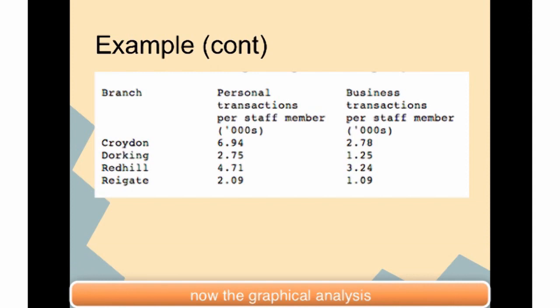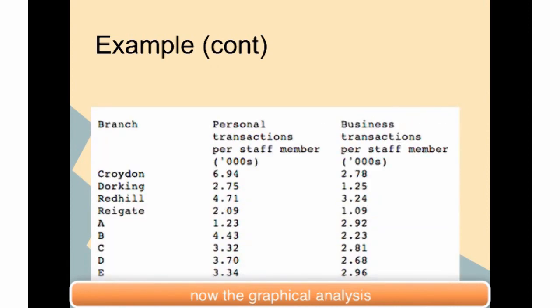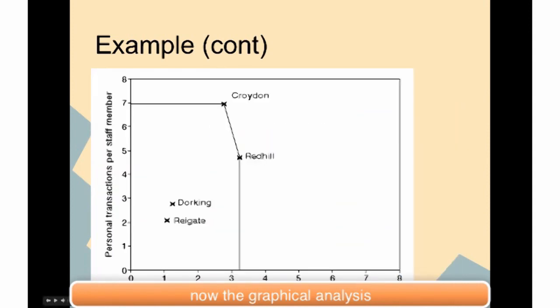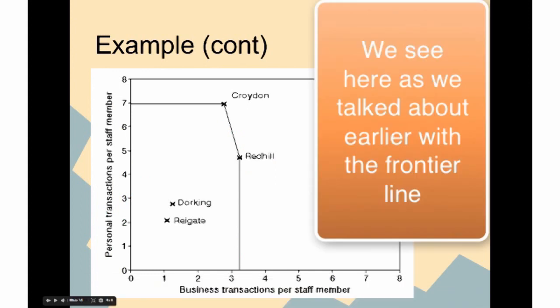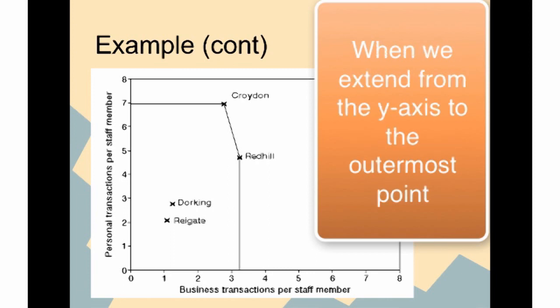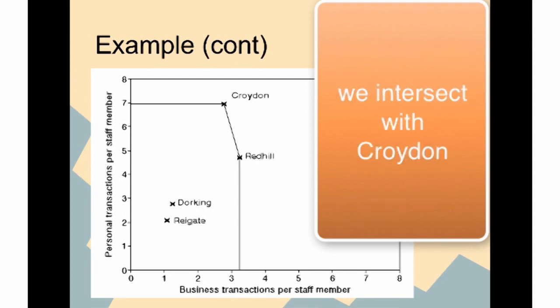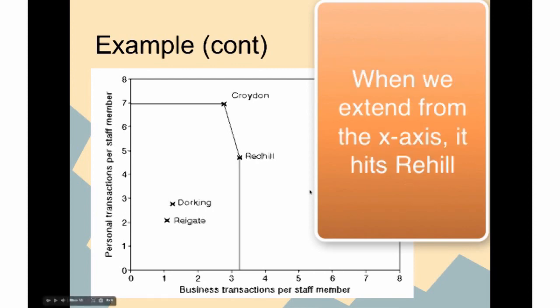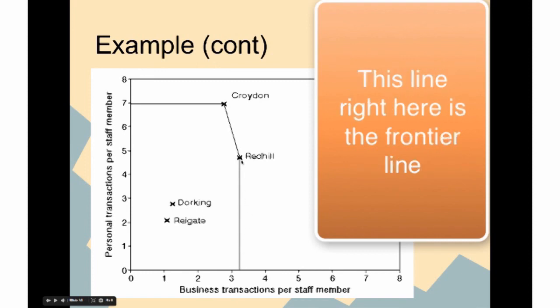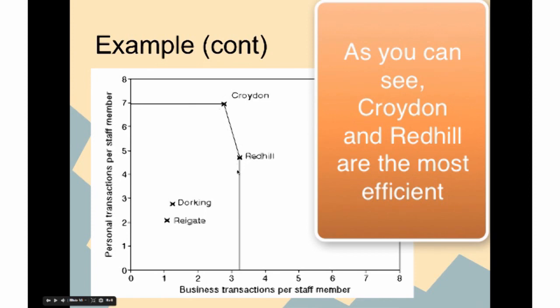Now to go on to the graphical analysis. As we talked about earlier with the frontier line, when we extend from the y-axis to the outermost point, we intersect with Croydon, and when we extend from the x-axis, it hits Redhill. This line right here is the frontier line. As you can see, Croydon and Redhill are the two most efficient.